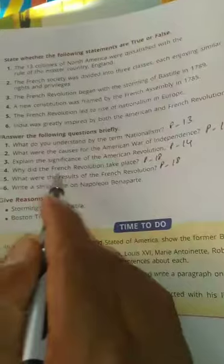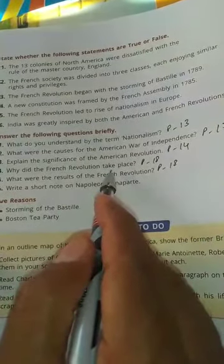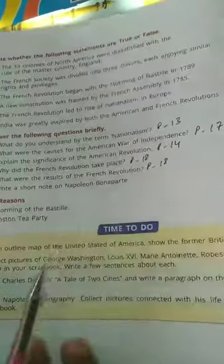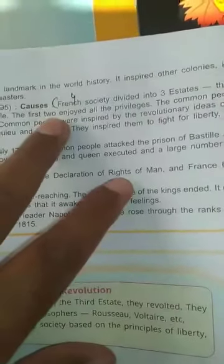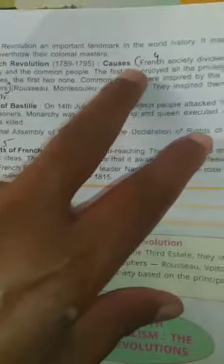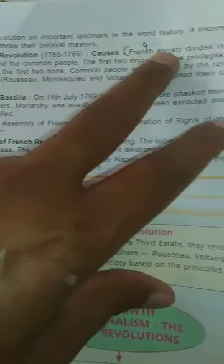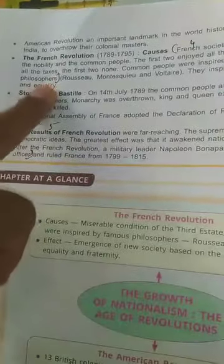Fourth answer. Why did the French Revolution take place? Page 18. Points to remember. Causes. French society to philosophers.